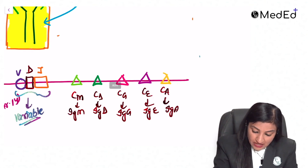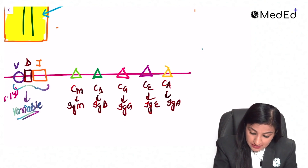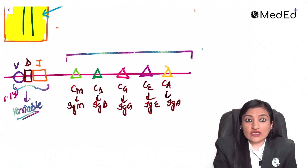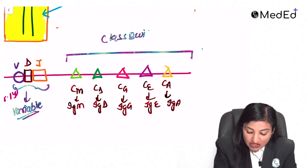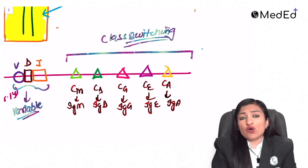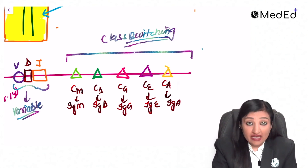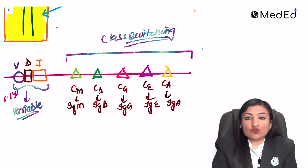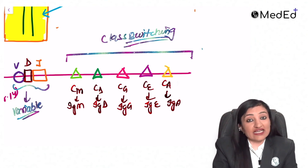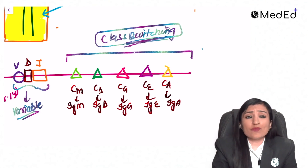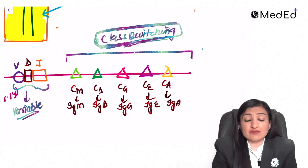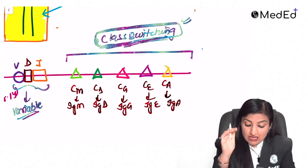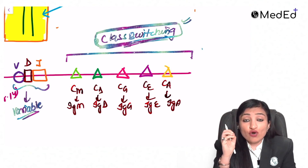Class switching occurs in the constant region segments — represented by these triangles. It has nothing to do with the VDJ part, which continues to bind the antigen. If we are dealing with a mucosal pathogen, the local lymph nodes produce a specific cytokine directing class switching toward IgA. Class switching occurs because of cytokines, and T cells produce cytokines.